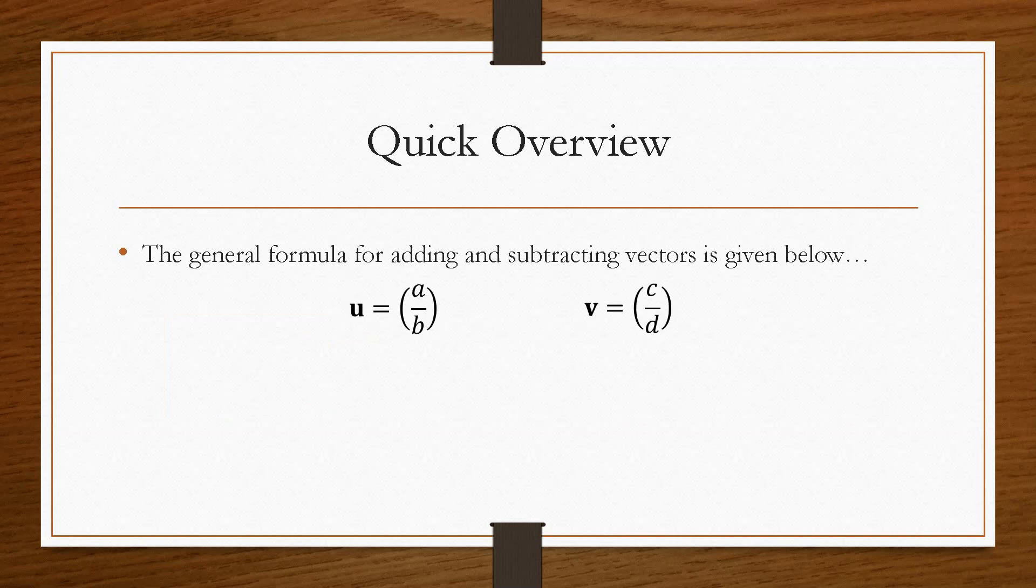A general formula for adding and subtracting the vectors can be given by this expression here. So what we are saying is if we want to add u and v, what we do is we add the two top values, and then we add the two bottom values. We have to keep in this vertical notation, so we have to make sure that the top values remain at the top, and the bottom values remain at the bottom.